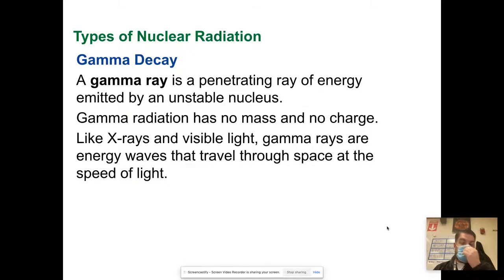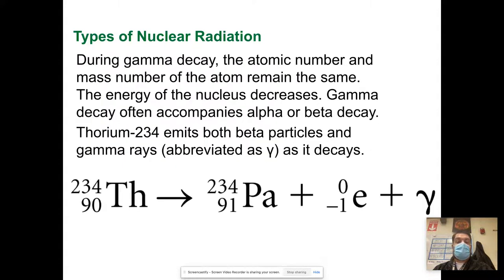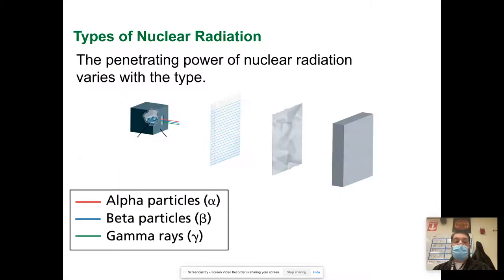Gamma decay is the third type of nuclear radiation. A gamma ray is a penetrating ray of energy emitted by an unstable nucleus. Gamma radiation has no mass and no charge. Like X-rays and visible light, gamma rays are energy waves that travel through space at the speed of light. That's one of your reading guide questions. There can be a gamma ray released too, and in that process energy is usually released. Matter can be converted into energy. The energy released is in the form of light energy or a gamma ray. It's not visible light, it's electromagnetic radiation. X-ray is electromagnetic radiation. Gamma rays are electromagnetic radiation, ultraviolet, all those things are forms of electromagnetic radiation.